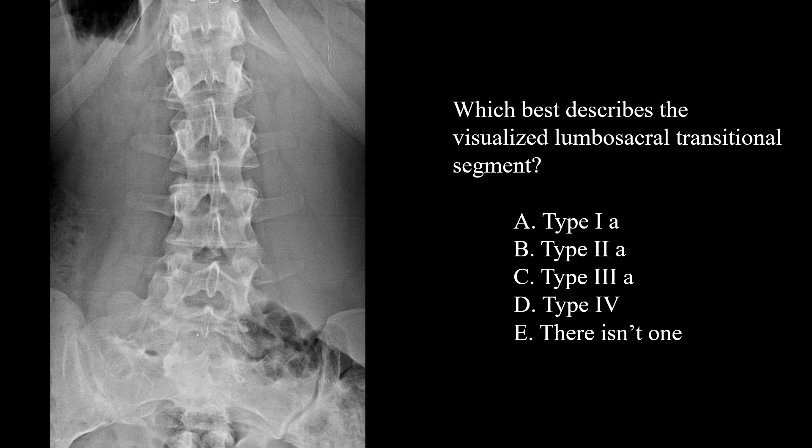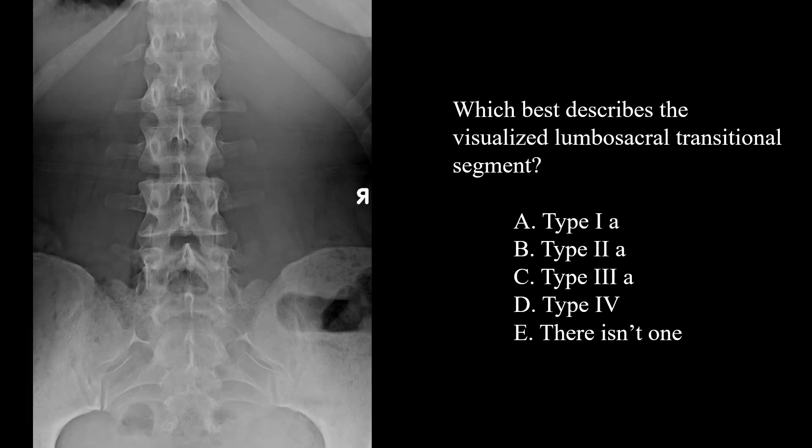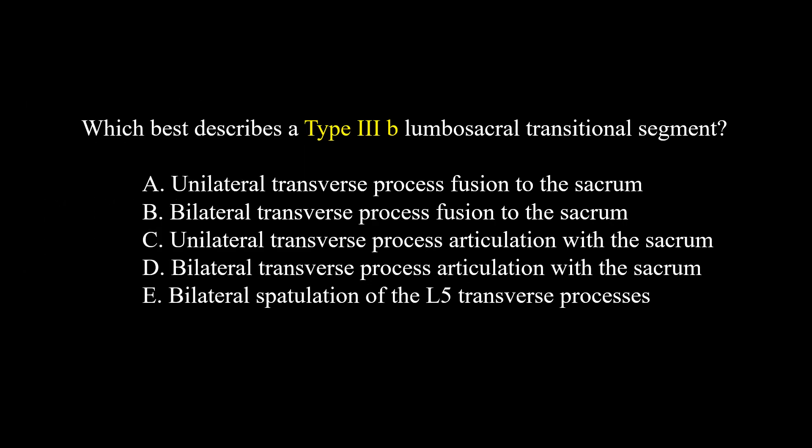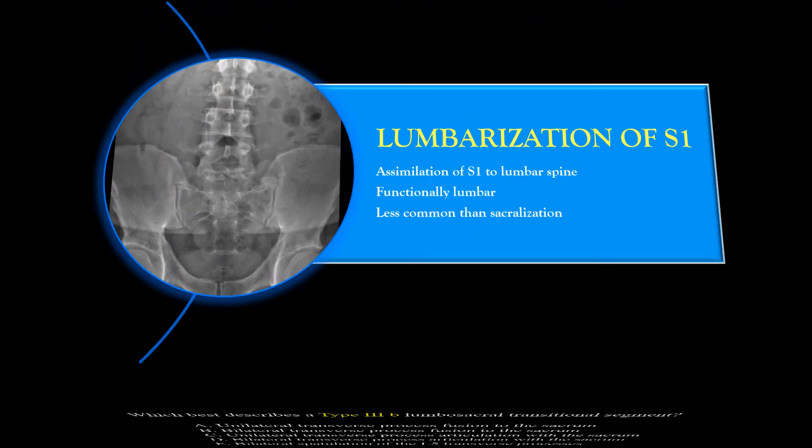That would make this a Type 3a, which best describes the visualized lumbosacral transitional segment. In this last case, there is no transitional segment — this is a normal lumbar spine. The question asked which best describes a Type 3b lumbosacral transitional segment, and Type 3b is bilateral fusion, so the answer would be B.